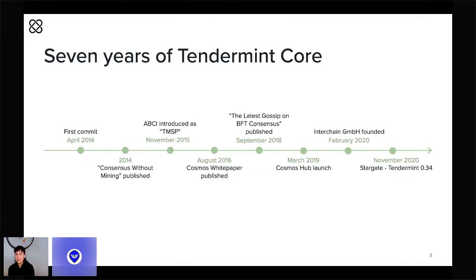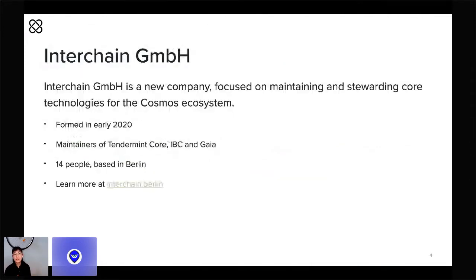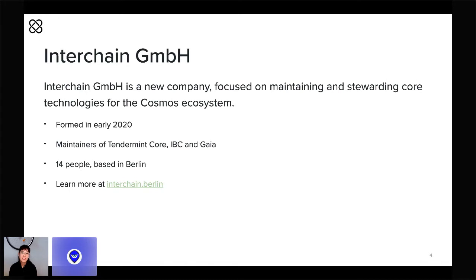This brings us to 2020. Interchain GmbH was formed — a new company owned by the Interchain Foundation and staffed largely by alumni from Tendermint Inc. Our mission is to work in lockstep with the foundation and to steward the core technologies that underpin the Cosmos ecosystem. Of the 14 Interchain GmbH employees, 11 are engineers, and from day one we have been laser-focused on building and maintaining the software that constitutes Tendermint Core and IBC.